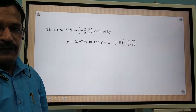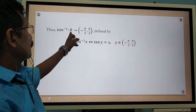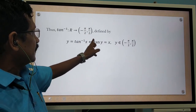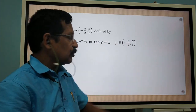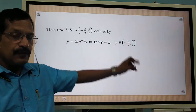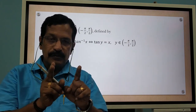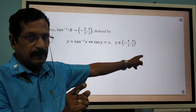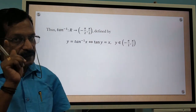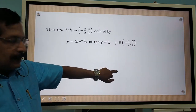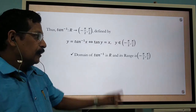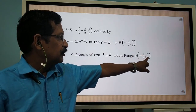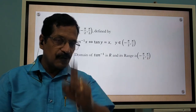Now, how to define tan inverse: tan inverse is from R to the open interval minus π/2 to π/2, defined by y = tan⁻¹ x, which implies and is implied by tan y = x, where y is in the open interval minus π/2 to π/2. Please note it is an open interval. The domain of tan inverse is the set of all real numbers, and the range is the open interval minus π/2 to π/2.